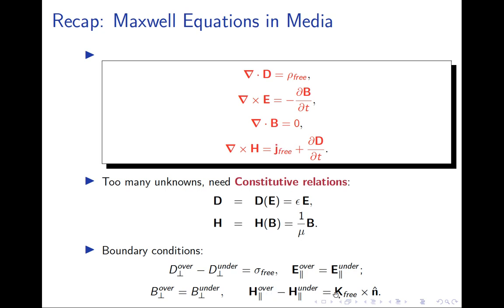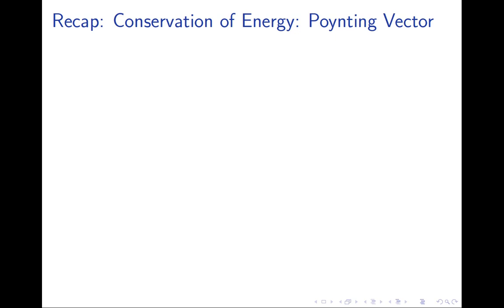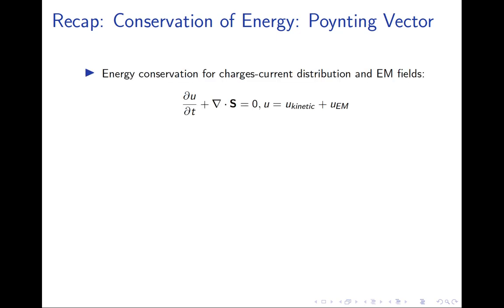For the tangential H field, applying Stokes' theorem to curl of H equals J_free across a rectangular loop at the boundary gives a discontinuity in tangential H proportional to the surface current. I encourage you to derive this cross-product form yourself; if stuck, Griffiths has a meticulous derivation. This concludes the Maxwell equation recap. Next, we review energy in EM fields, starting with work done on charge distributions subject to electromagnetic forces.